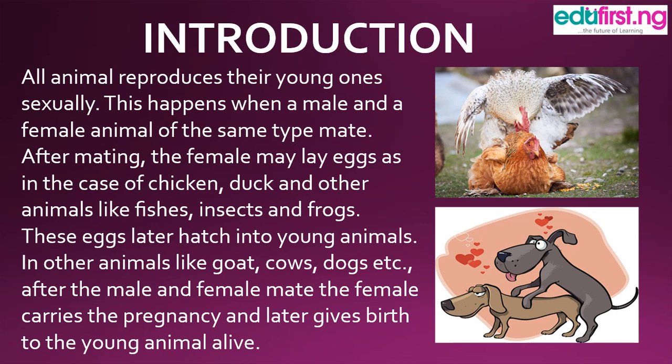After mating, the female may lay eggs, as in the case of chicken and other animals like fish, insects, and frogs. Not all animals reproduce their younger ones during the birth process. Some of them lay eggs, like in the case of a chicken, fish, insect, and frog. These animals lay eggs, and after some period of time, the egg hatches and the younger ones are reproduced.